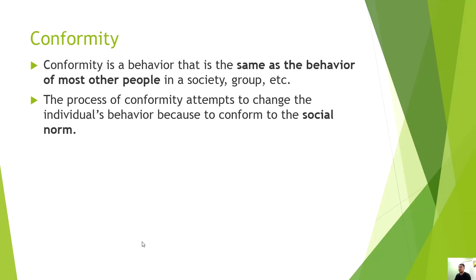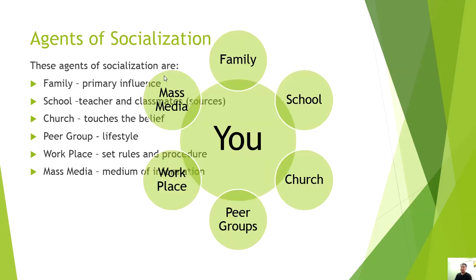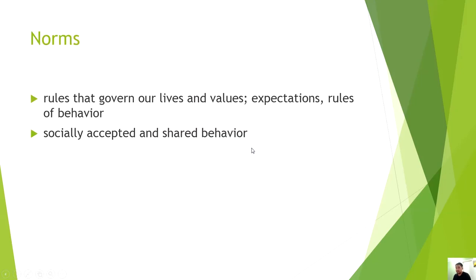The process to achieve social norms is conformity. Conformity is a behavior that is the same as the behavior of most other people in the society or group. The process of conformity attempts to change the individual's behavior to conform to the social norm. The arrow from the agents of socialization toward the individual represents conformity.